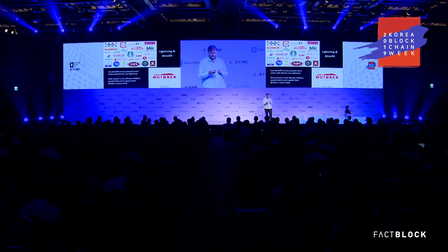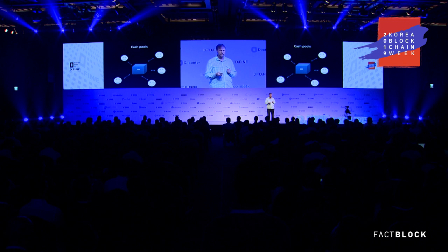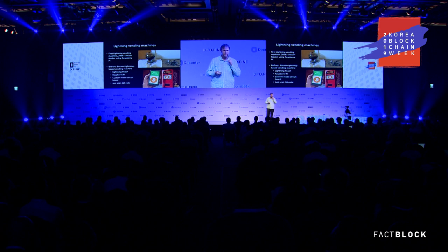That brings us to lightning. Bitcoin dominates the crypto space and has a really good scalability model: make sure you've solved the security and trust-minimization problem in layer one first — you've got to get that right before anything else. On that foundation you build more efficient layer twos that sacrifice a little of that trust minimization. And relating to smart contracts, you can do vending machines with lightning.